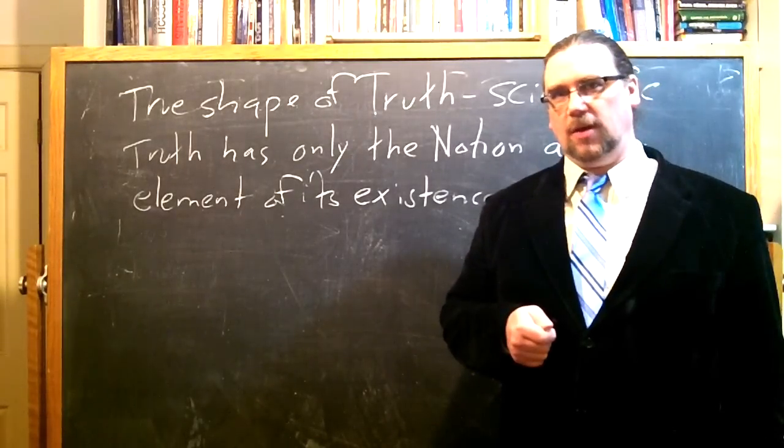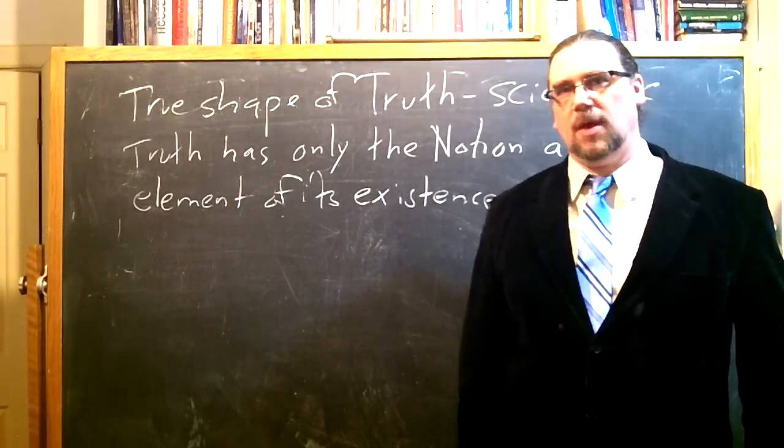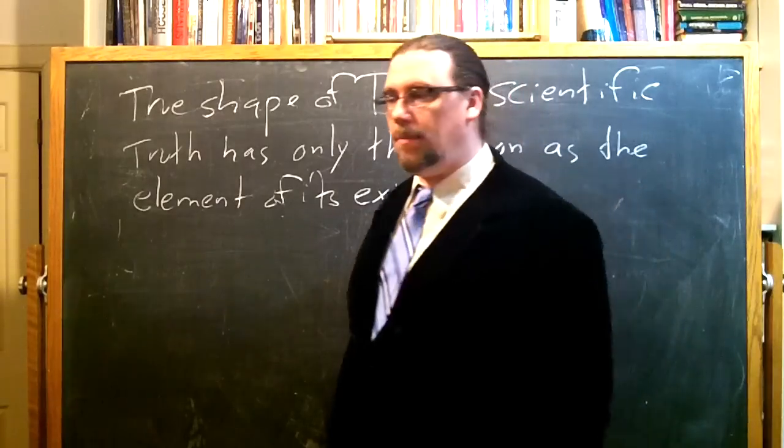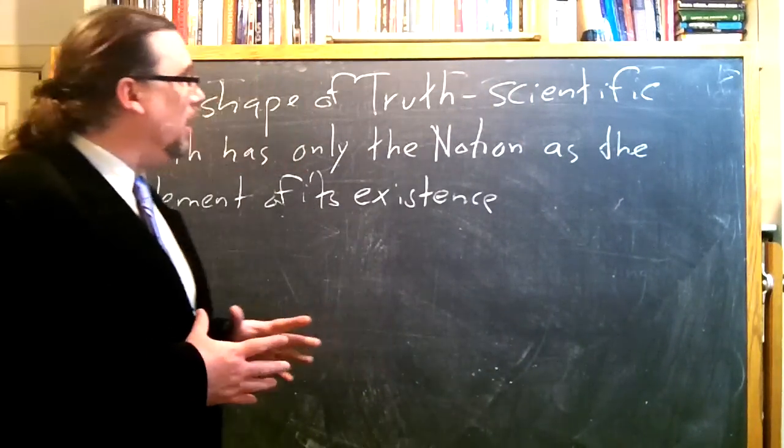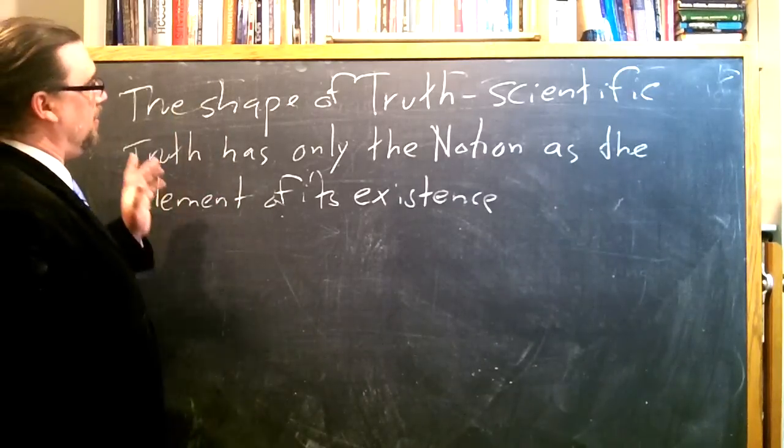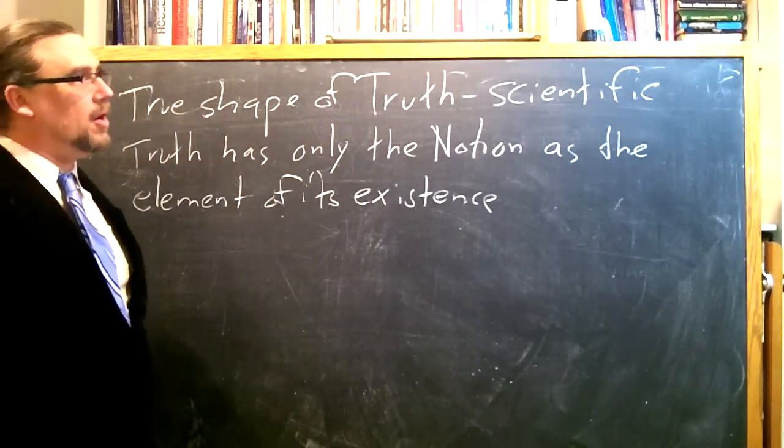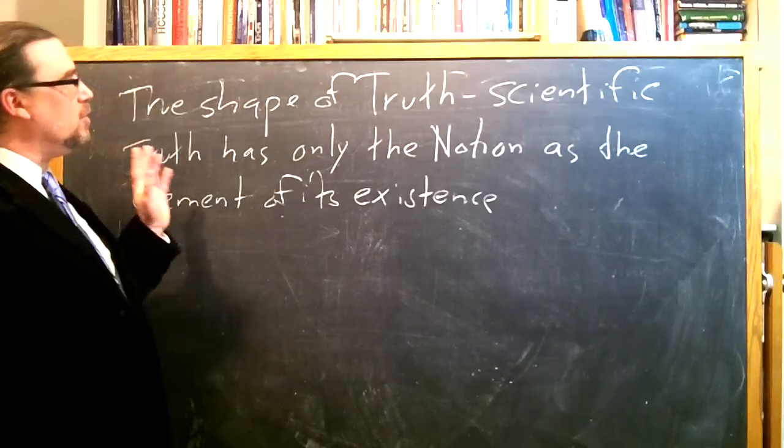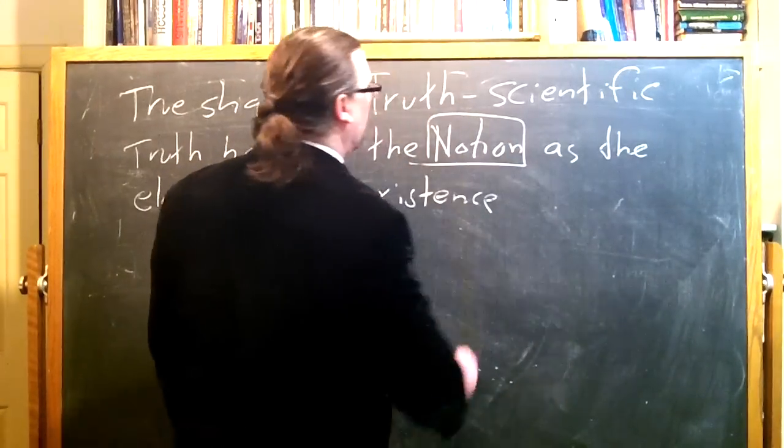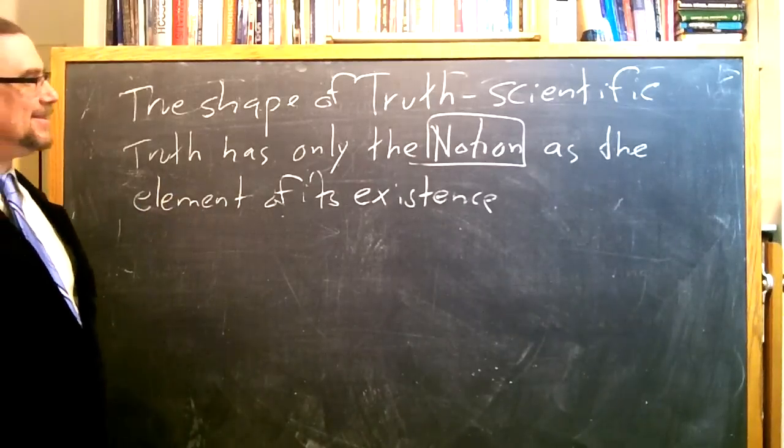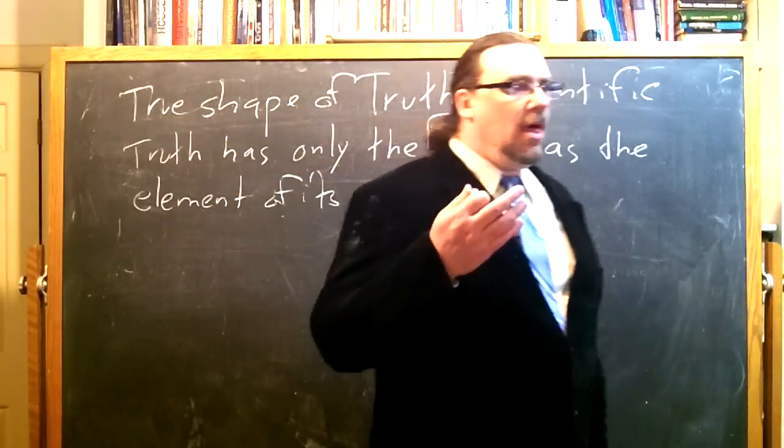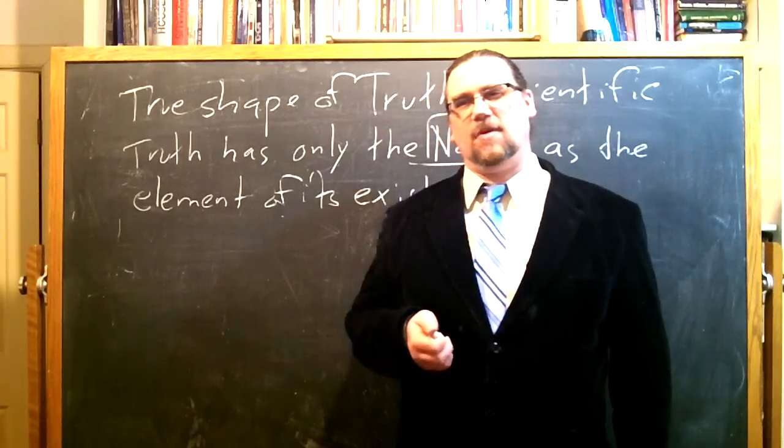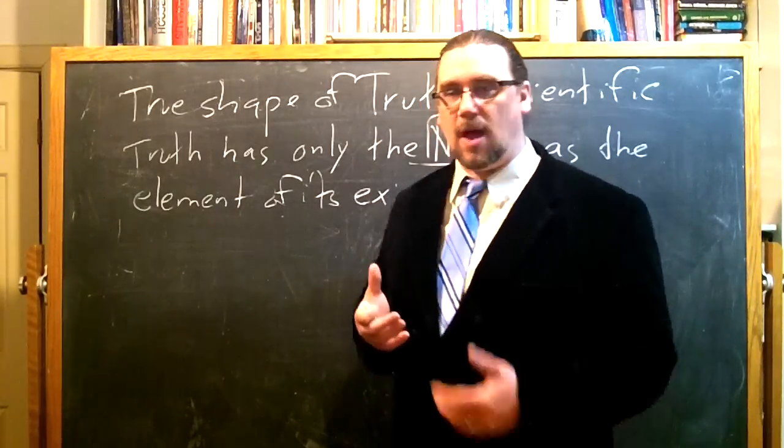Now, in this section, Hegel is going to begin to engage in some more criticism of some of the prevalent points of view in the world of thought of his own time. And he's starting out by saying, if it's really the case that the shape of truth is necessarily scientific, or put in another way, to say that truth has only the notion as the element of its existence, then what implications does that have? That means that over-simplifying ways of trying to apprehend truth are not going to be successful.